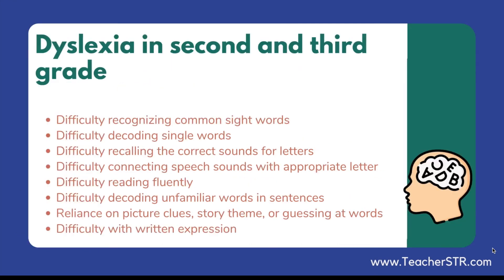For students in second and third grade, you may notice the following signs: difficulty recognizing common sight words; difficulty decoding single words; difficulty recalling the correct sounds for letters and letter patterns in reading; difficulty connecting speech sounds with appropriate letter or letter combinations; and omitting letters in words for spelling. Difficulty reading fluently — for example, reading in a slow, inaccurate, or expressionless way, which is also called prosody. Difficulty decoding unfamiliar words in sentences using knowledge of phonics; reliance on picture clues, story theme, or just guessing at words; and difficulty with written expression as well.